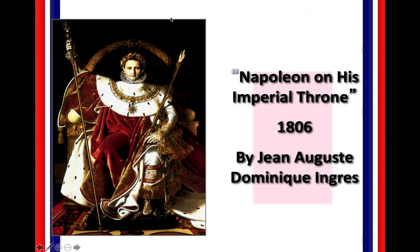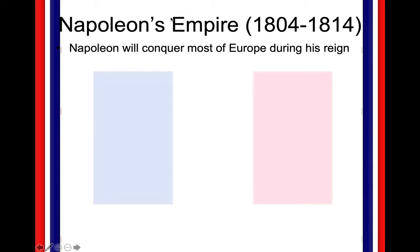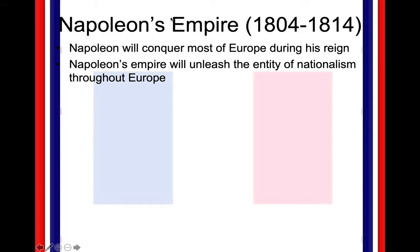Here's a very famous portrait of Napoleon on the throne. Napoleon in his empire is going to conquer most of Europe during his reign, very similar to Hitler. But there's a huge effect of Napoleon's empire: he is going to unleash the entity of nationalism and liberalism throughout Europe. We'll talk about nationalism and liberalism more in Chapter 12 and in some of the other lectures.